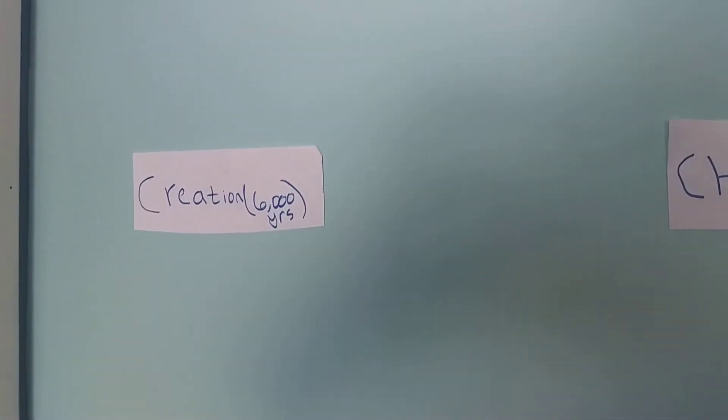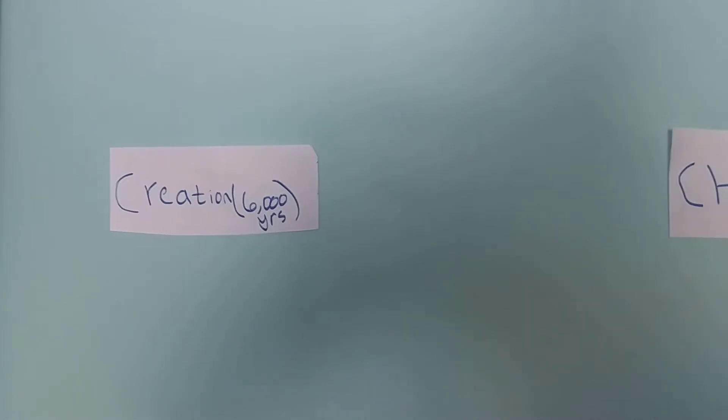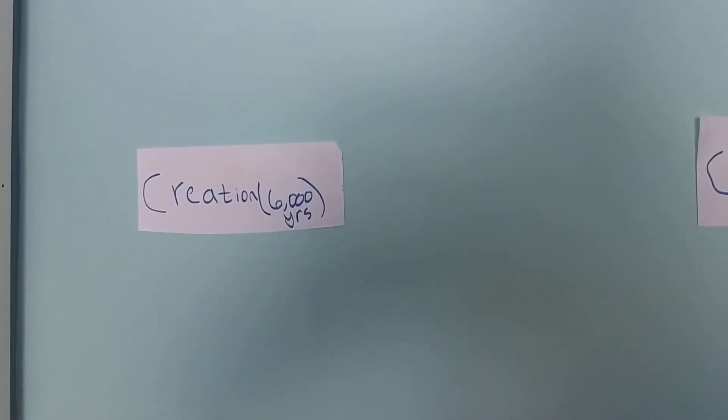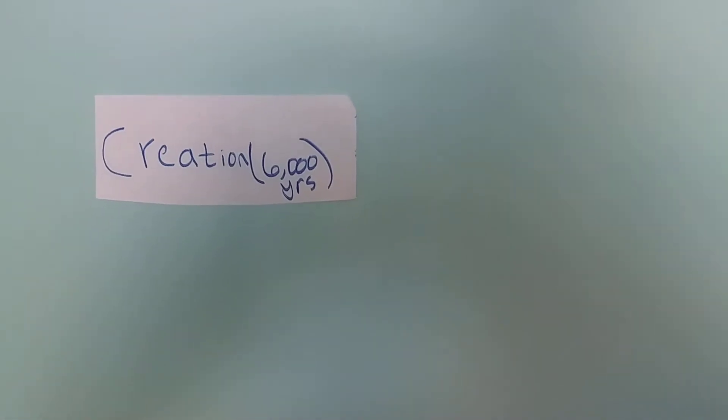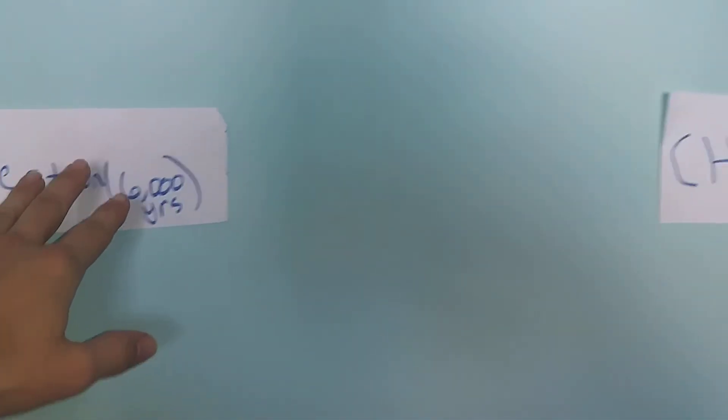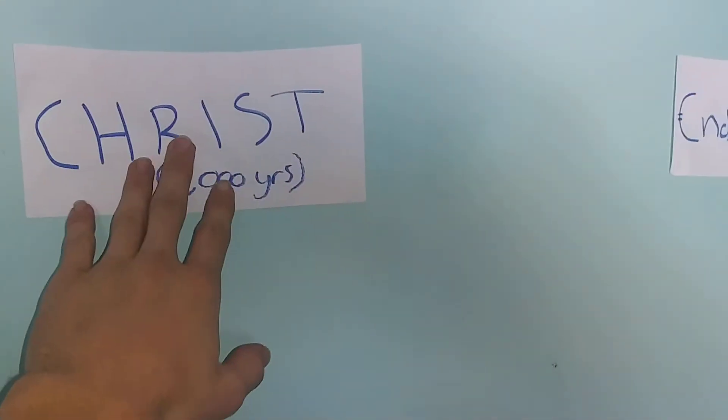Hi there, I made this because it helped me sort some things out and I hope it will help you too. It's based on Ken Ham's model: six thousand years ago Earth was made, two thousand years ago Christ came.